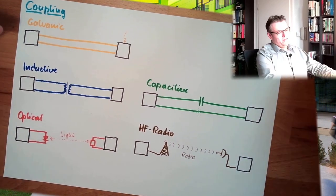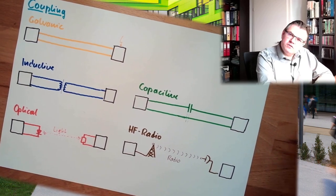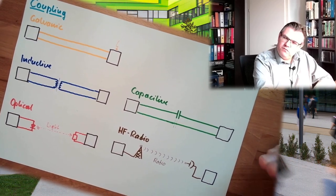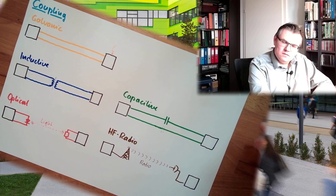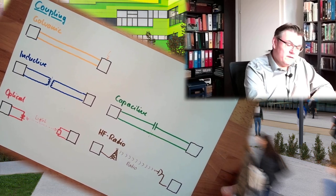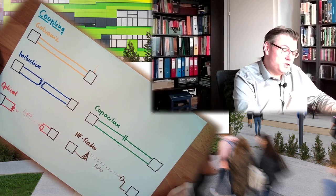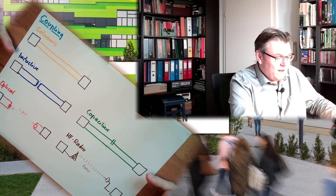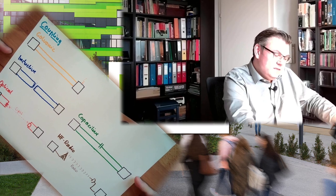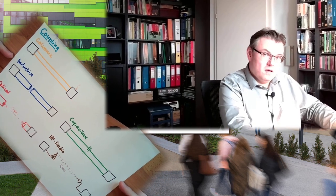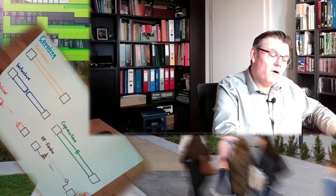So these are the methods on how we can transfer information from one to the other side. And often, like I said, often we want to have them insulated, isolated to each other. So we have to use some galvanic separating things, those four down here, we have to use them.